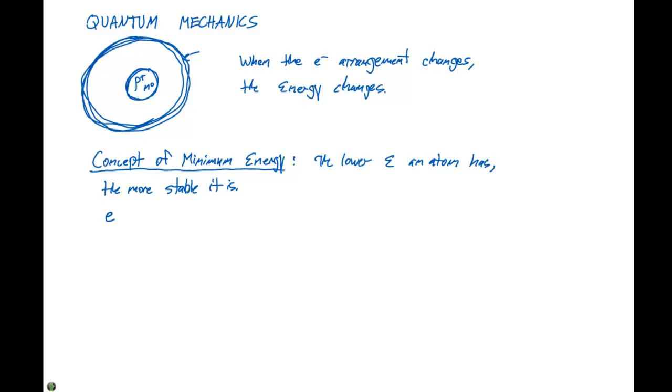So electrons prefer to be arranged in a combination of minimum energy. So these electrons are going to arrange themselves in any way possible to minimize their energy or lower their energy.